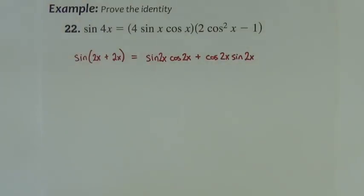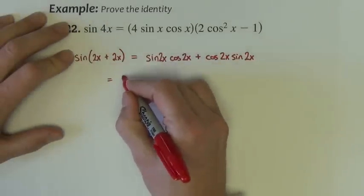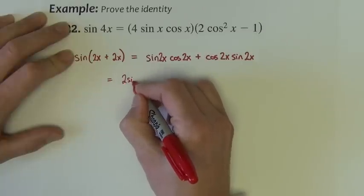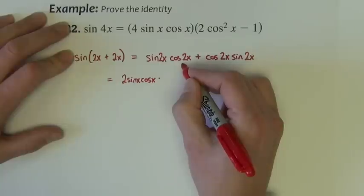Now I've got a lot of double angles, and each of these double angles I'm going to write as their double angle formula. Sine 2x is 2 sine x cosine x.